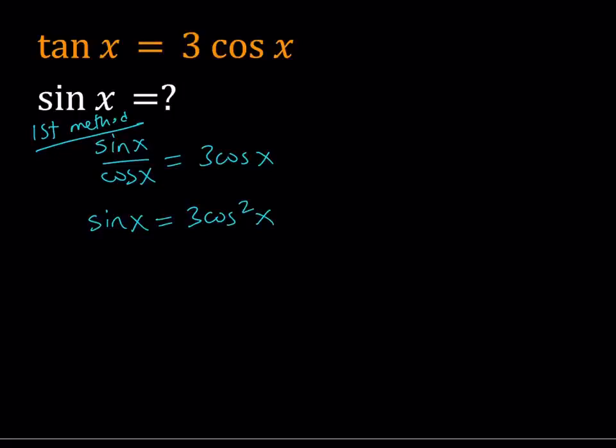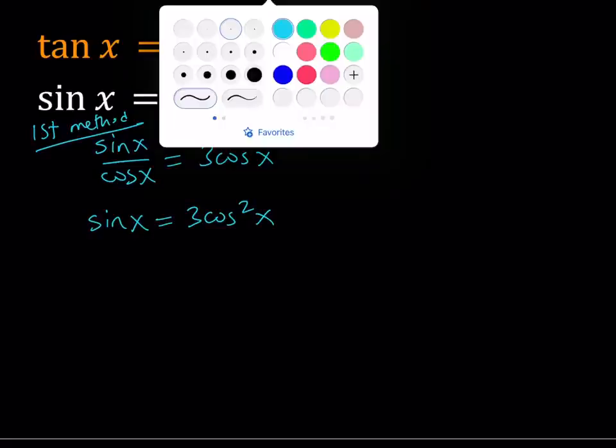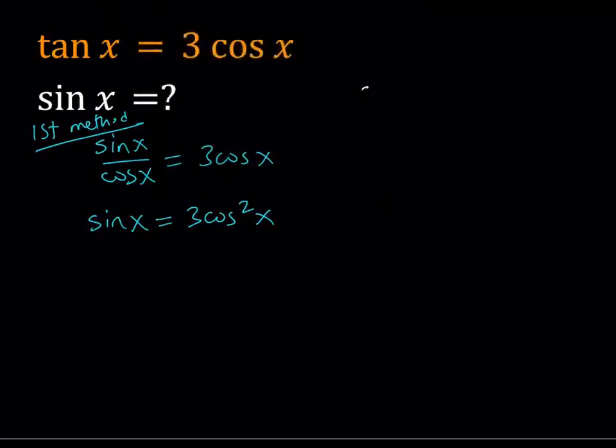Now, this equation can be handled by using the famous Pythagorean theorem or the formula or the identity, whatever we're going to call that. But that formula is very important in trigonometry. If you're dealing with trigonometry, you definitely have to know this. That's sine squared x plus cosine squared x is always equal to 1.